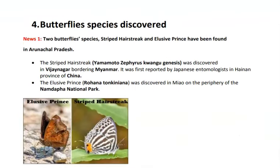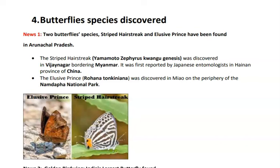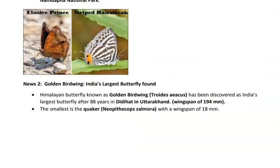The fourth topic is newly discovered butterfly species. Two species — Striped Hairstreak and Elusive Prince — have been found in Arunachal Pradesh, so their location must be remembered. Additionally, the Golden Birdwing, India's largest butterfly, has been found in Didi Heart in Uttarakhand. The smallest butterfly is the Quaker with a wingspan of 18 mm, while the largest has a wingspan of 194 mm.